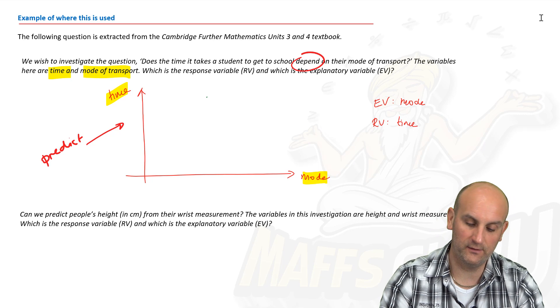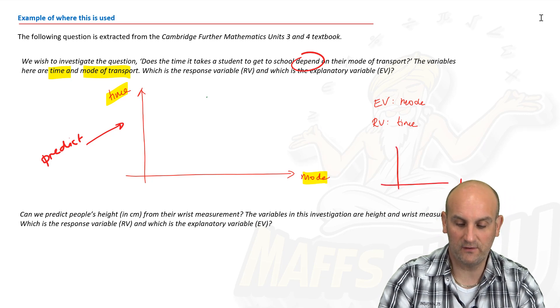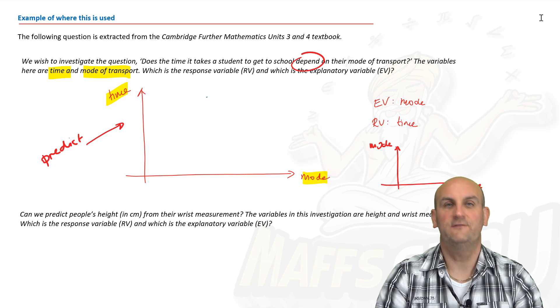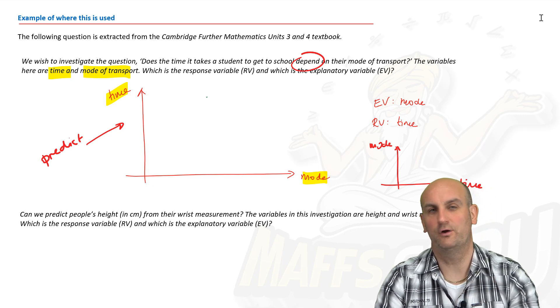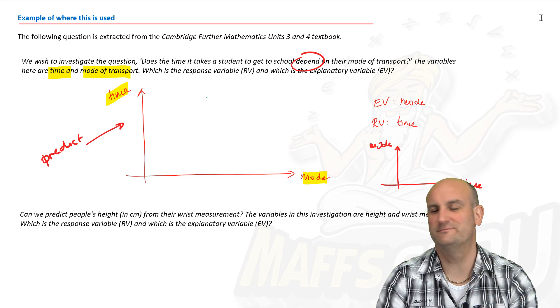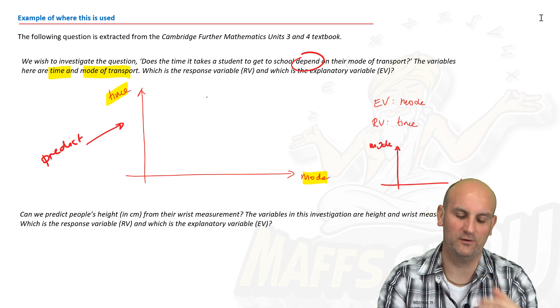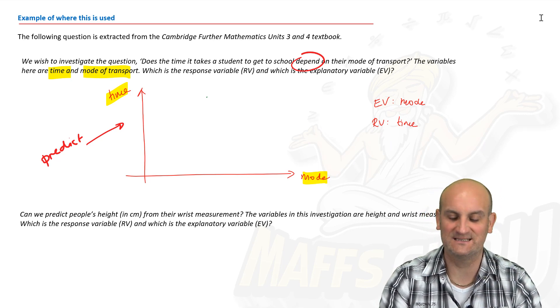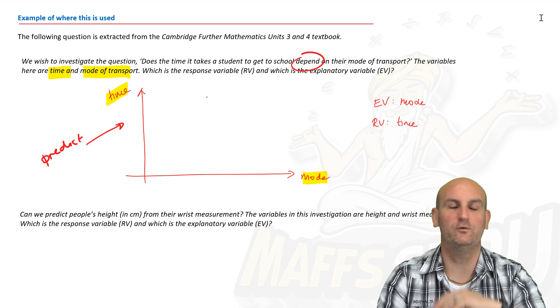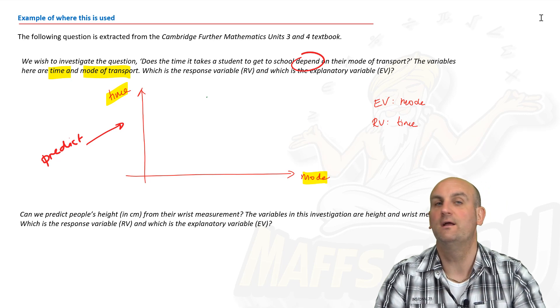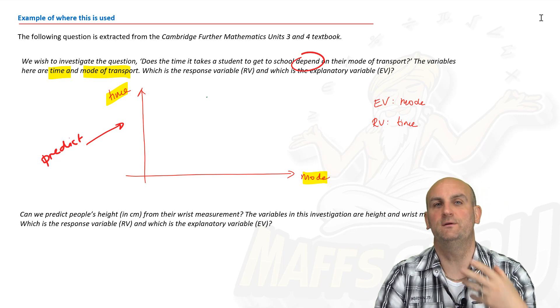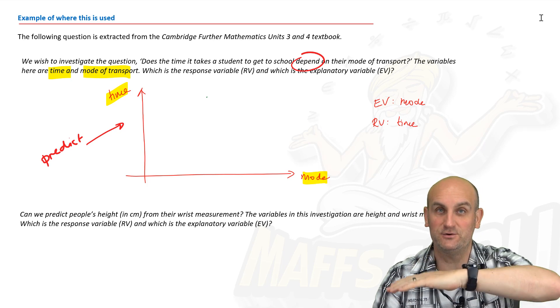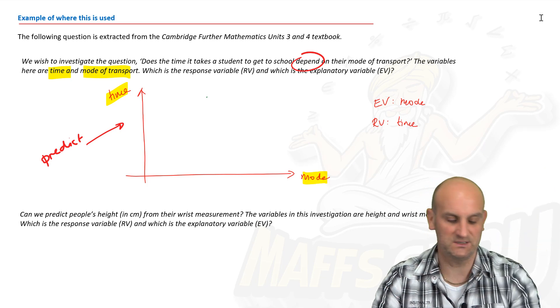Now if we try and flip it around the other way and if we try to have time and mode, if I gave you a time, could I predict the mode of transport? Probably not. And again, these are all down to interpretation and scenarios and exam questions, and people have argued with me left, right, and center about all of these. At the end of the day, the questions you have will be fairly obvious which one is the explanatory on the x-axis and which one is the response variable.